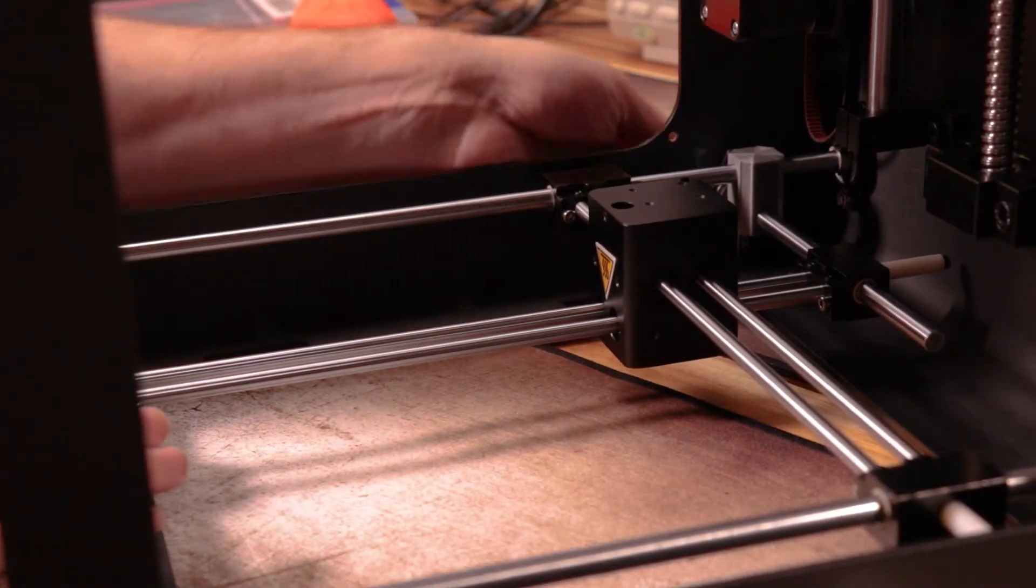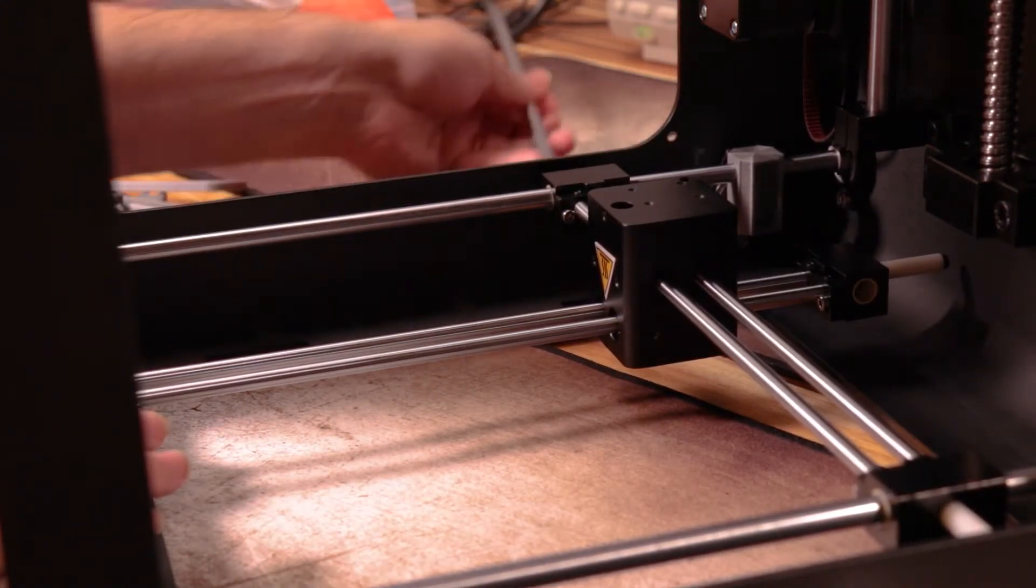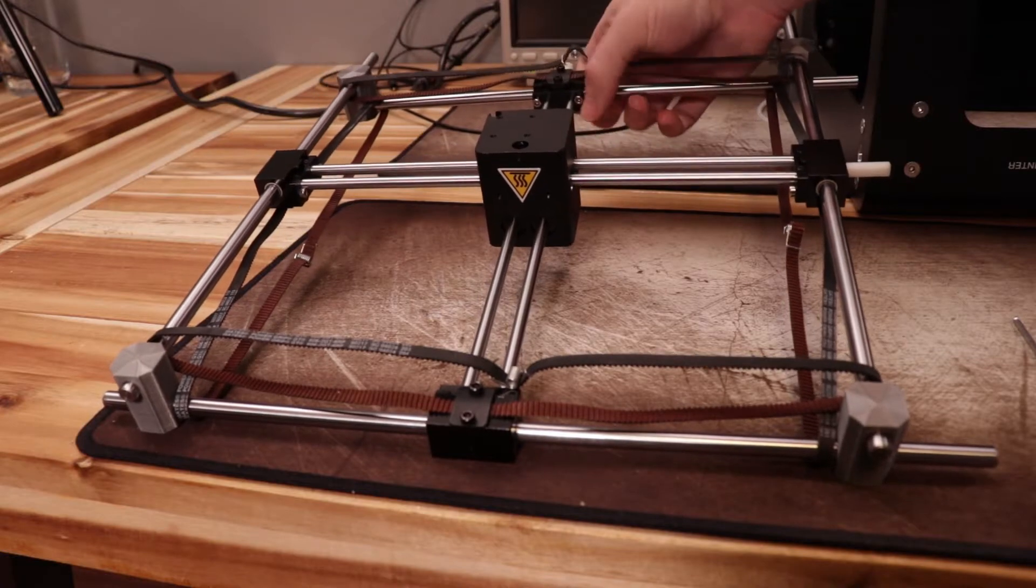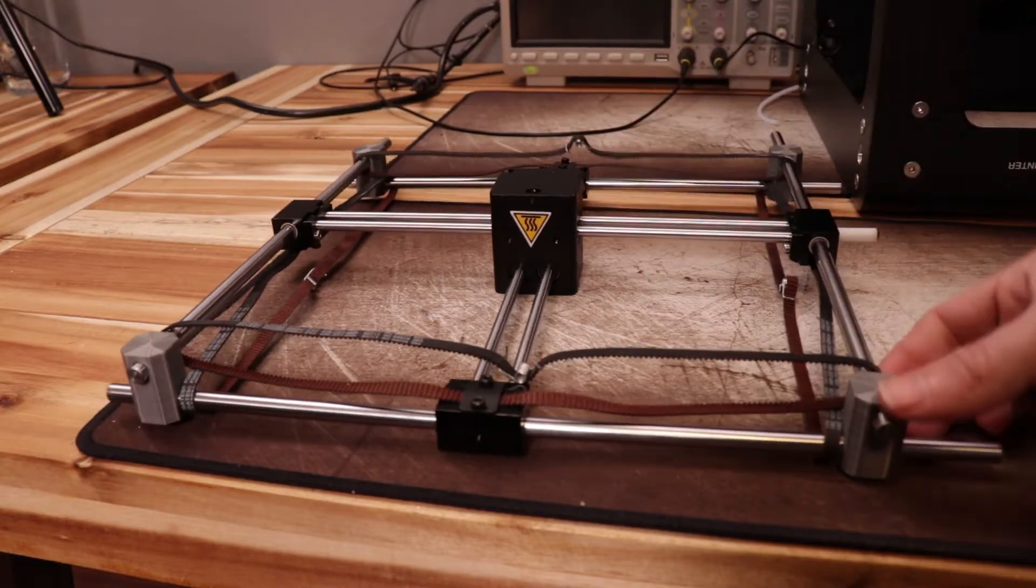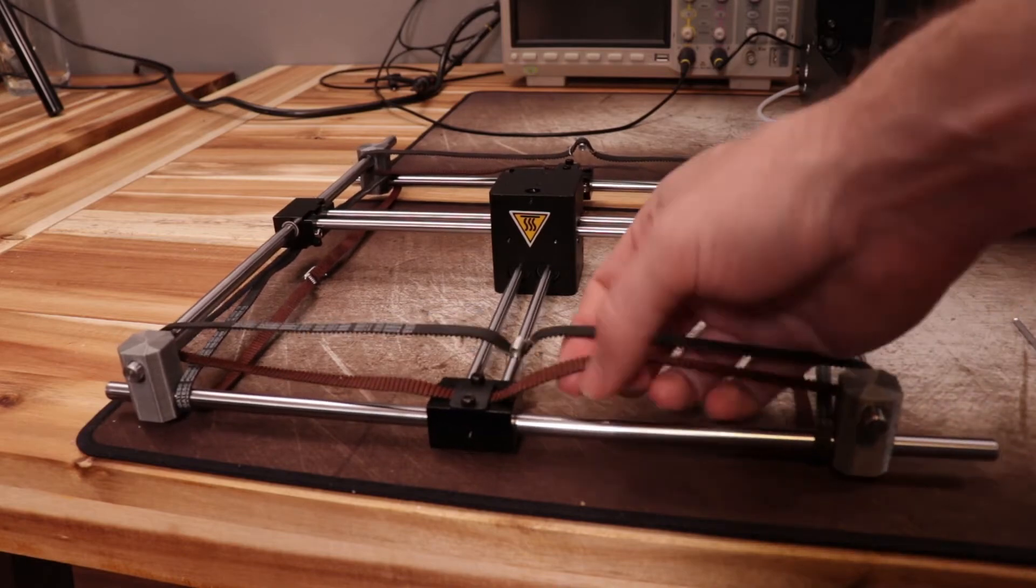Picking up where that video left off, let's go ahead and remove the alignment rig and all the 8mm rods. Here's a quick view of everything before we get started, just showing how everything on the gantry interconnects and has to go together at the same time.